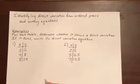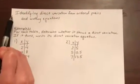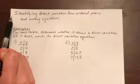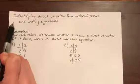Math 97, Quiz Topics 3: Identifying Direct Variation from Ordered Pairs and Writing Equations.